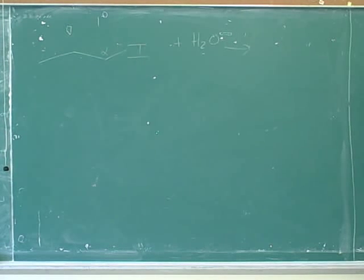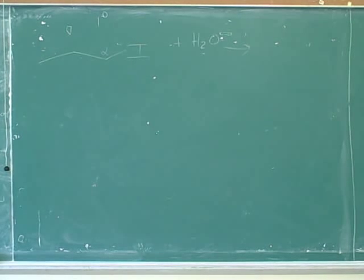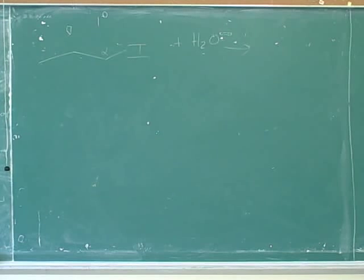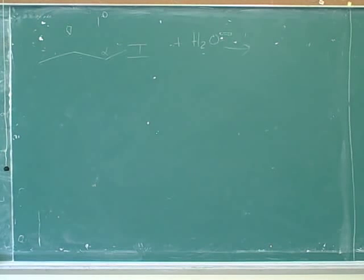The stability of the carbocation. That's the key. The big obstacle to an SN1 is stabilizing the carbocation, because nature doesn't like forming charges. Nature doesn't like forming that carbocation. Nature will not let us do an SN1 unless we can stabilize that carbocation. Unless there's some way to stabilize it, nature won't let us make it in the first place. That wasn't an issue for SN2, because in SN2 there never is a carbocation. But for SN1, we're going to have to form a carbocation.